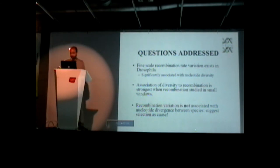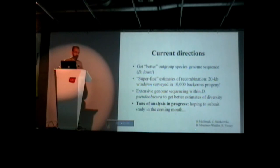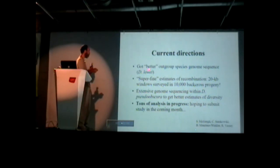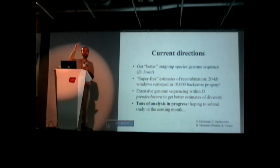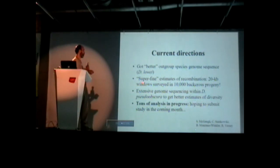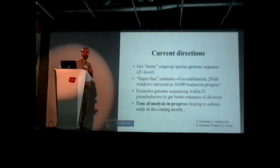So it's very compelling with this new data. Nonetheless, we're still looking more carefully. We've got a better outgroup species — we recently got D. lowei, which is a nicer, more distantly related outgroup. We're also doing more fine-scale recombination mapping in 20-kilobase windows, which requires extensive PCR work — my technician is doing this by hand, not automated — across 10,000 back-cross progeny.